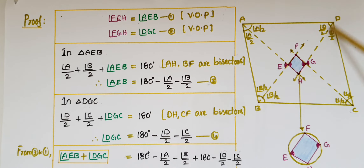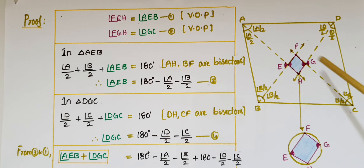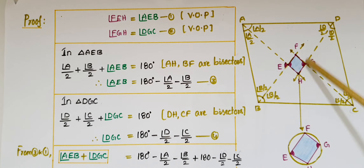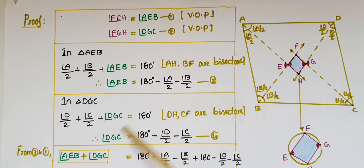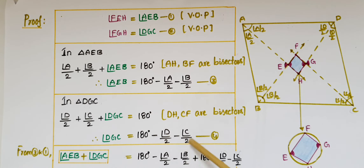Similarly, in triangle DGC: D/2 plus C/2 plus angle DGC equals 180 degrees. Therefore, angle DGC equals 180 minus D/2 minus C/2. This is the fourth equation.